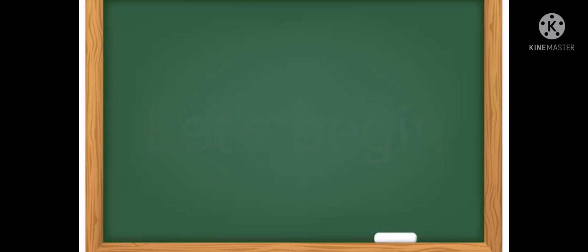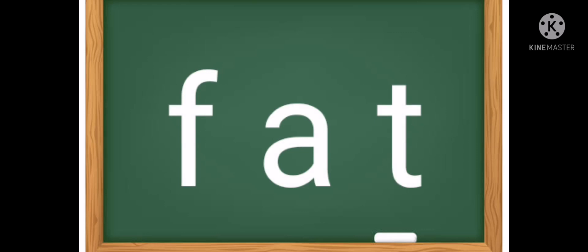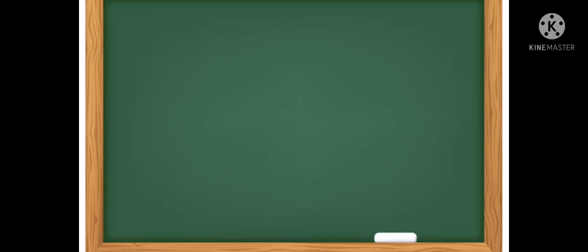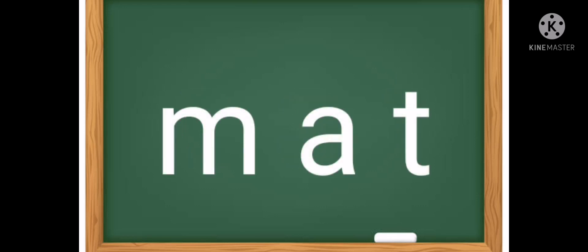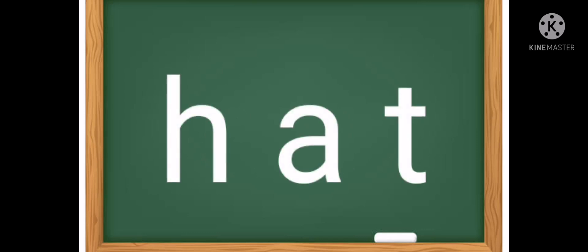This time I want you to repeat after me. Okay, let's begin. F, A, T — fat, fat. Can you repeat? Very good. Next: C, A, T — cat. Can you repeat? Well done, children. And next: M, A, T — mat. Can you repeat? Well done, children. And next: H, A, T — hat. Can you repeat?